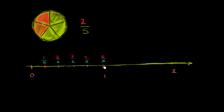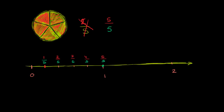And you might say, wait — 5 over 5, we've gotten to 1. And that's exactly right. If I were to shade in five things over here — 5 over 5, or 5 fifths — we've already seen that this is a whole. And over here, if we've traveled 5 fifths of the way towards 1, we've gotten to the whole 1. 5 fifths is the exact same thing as 1. It is equal to a whole.